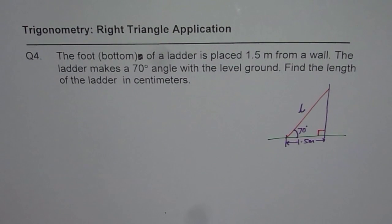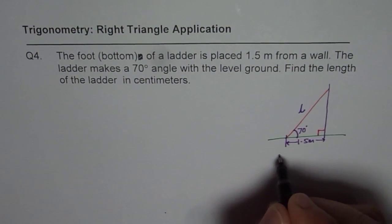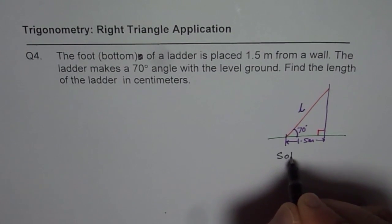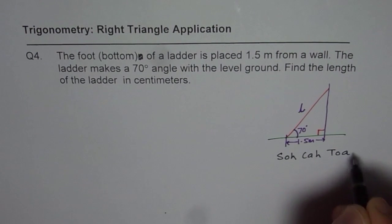Now we need to find L. So we have the diagram. So now look into Soh Cah Toa. Soh Cah Toa is sine is opposite over hypotenuse, cos is adjacent over hypotenuse, tan is opposite over adjacent side.